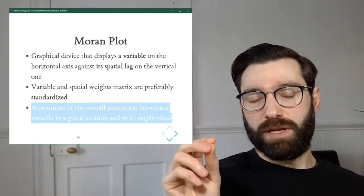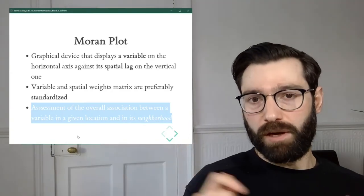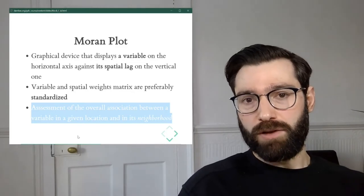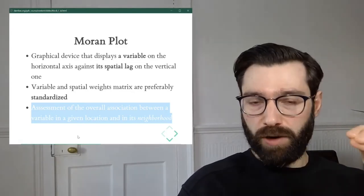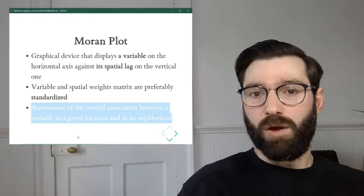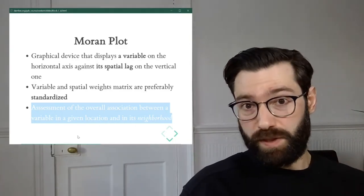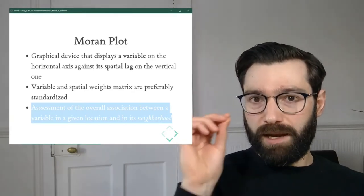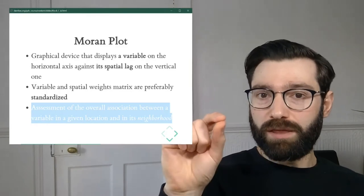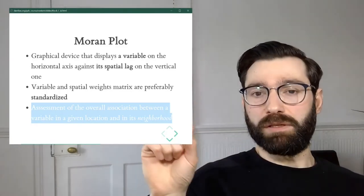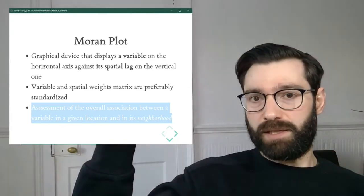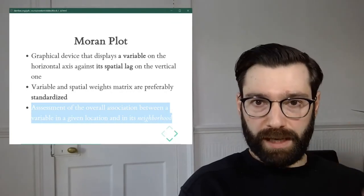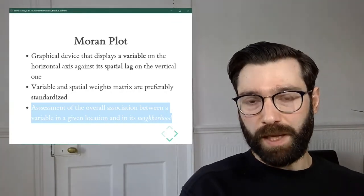What is more important is that the Moran plot provides a ready and quick to assess way to check the overall association between the values at a given location and the values in the surroundings of each location. The spatial lag helps us measure what are the values of a variable in its surrounding neighborhood. What the Moran plot is doing is putting in relation the values of that variable in a particular location and is doing that for the entire dataset.